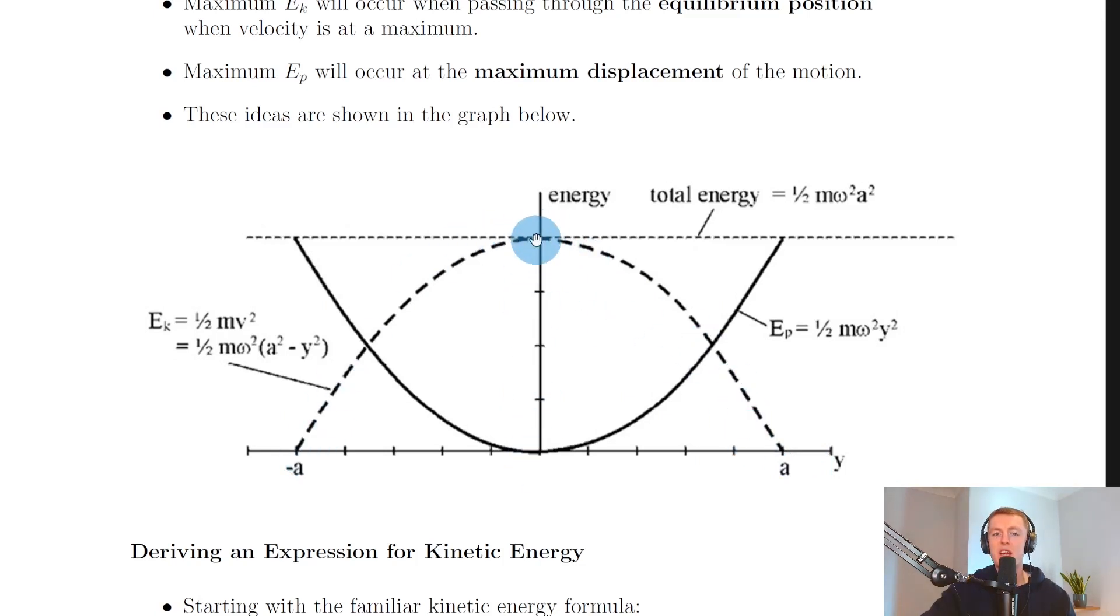So this dashed line must be the kinetic energy of the object undergoing SHM, which is labeled over here, EK. And you can see that at the ends of the oscillation, you've got maximum amplitude A and minus A, where the kinetic energy is zero.